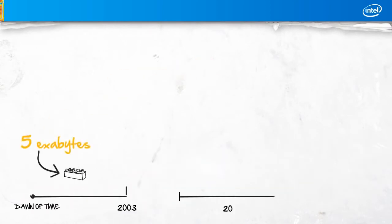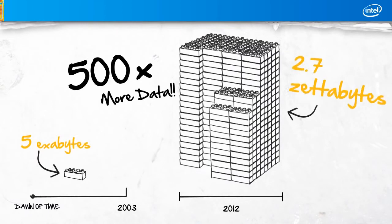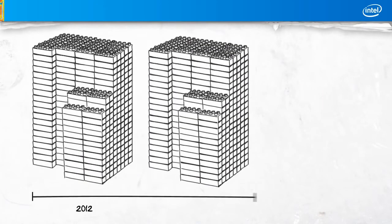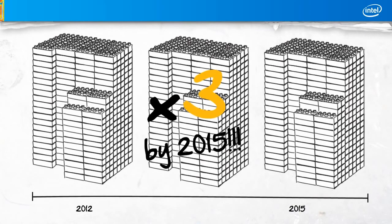In 2012, global data will grow to 2.7 zettabytes. That's 500 times more data than all data ever generated prior to 2003. And it's going to grow 3 times bigger than that by 2015.